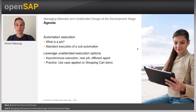Today, we are going to talk about management of attended and unattended design at the development stage. For that, we will first introduce and define what is a job in the context of SAP Intelligent Robotic Process Automation. We will then see and remind what is the standard execution mode for automation. As a second part, I will show you a specific attended option available at design time that will let you do asynchronous execution as a new job on a different agent.